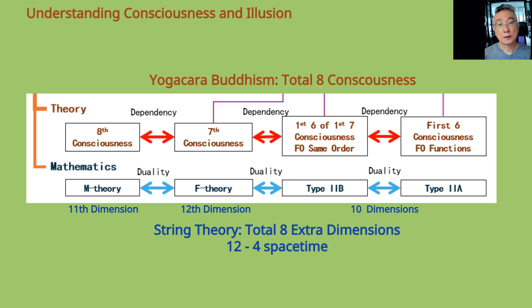In a simplified manner, the diagram shows the various dependencies among eighth consciousness, seventh consciousness, fruit of same order, and fruit of functions. Note that the last two are strongly related but yet different.